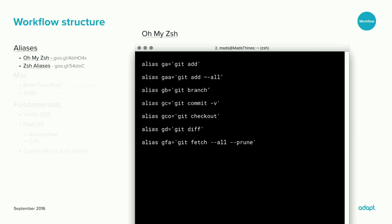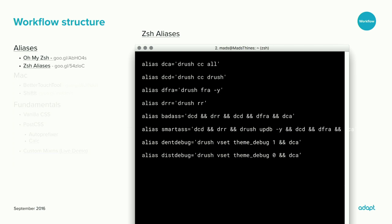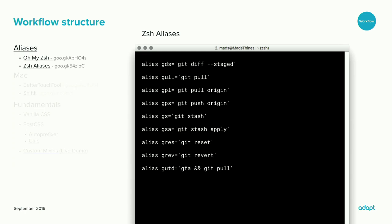Oh-my-zsh doesn't have great compatibility for Drupal, so I created the same thing but just for the things I need. For example, instead of writing 'drush cache-clear all' you can write 'dca.' That really saves a lot of time. I also added some git support — go check it out.